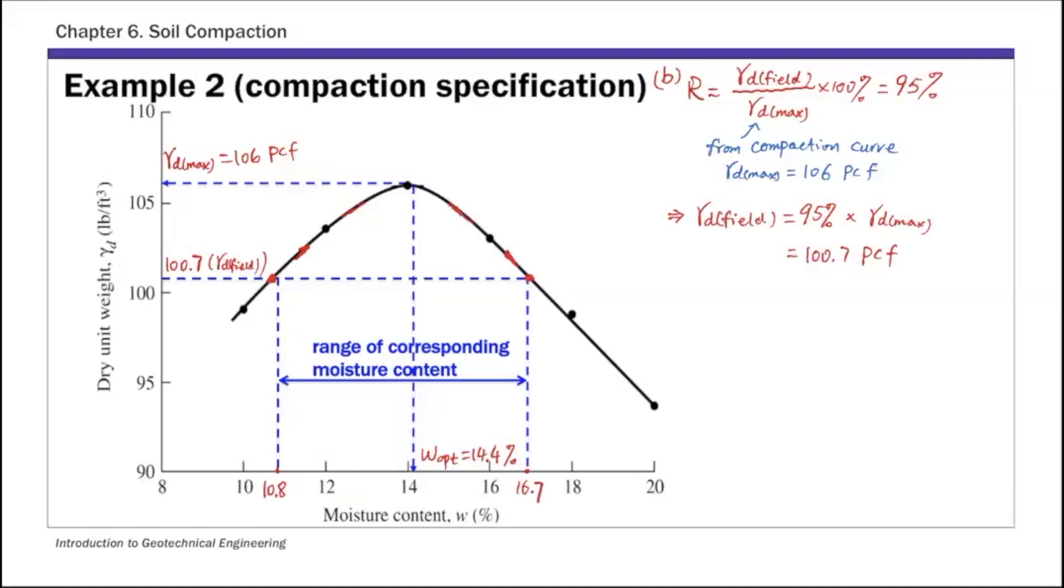So if you compact soil in the field with the moisture content between these two limits, 10.8 and 16.7, the unit weight is going to be higher than 100.7. So that means you meet the specification, you meet the requirement. So if you compact soil within this, you're going to get gamma d higher than that 95%. So the acceptable range, water content corresponding to 95% of relative compaction is 10.8% to 16.7%.